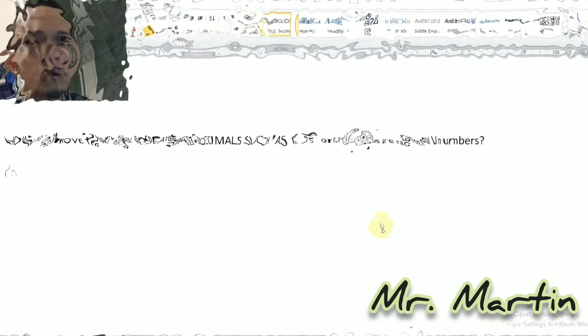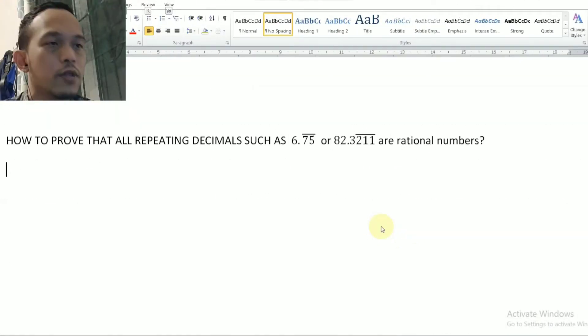Now I want to teach you about how to prove that all repeating decimals are rational numbers. I will give you two examples here.